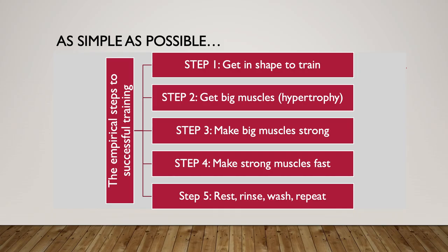Now looking at periodization 101 — the empirical steps to successful strength training. Step one: get in shape to train. Step two: get big muscles. Step three: make big muscles strong. Step four: make strong muscles fast. Step five: rinse, wash, repeat. Let's break these down individually.